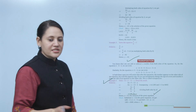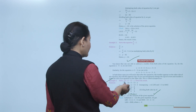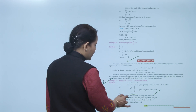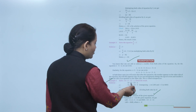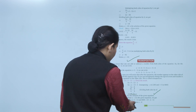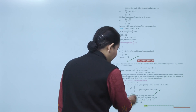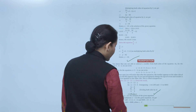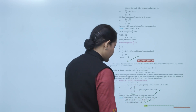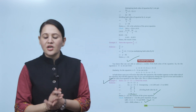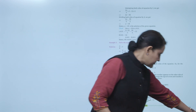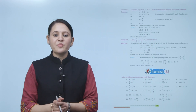We can check the answer by substituting x equals 2: LHS is 3 times 2 plus 5 equals 11, and RHS is 13 minus 2 equals 11. LHS equals RHS, confirming x equals 2 is the solution. Next is exercise 12.2.